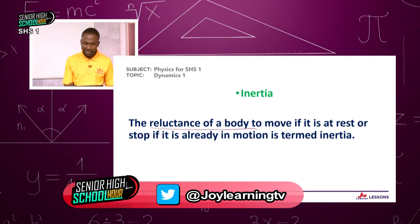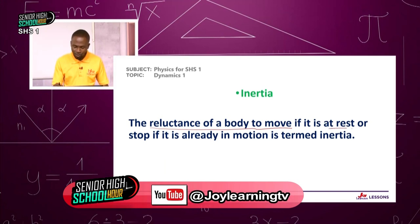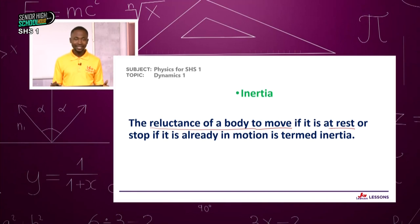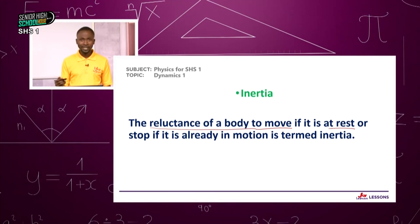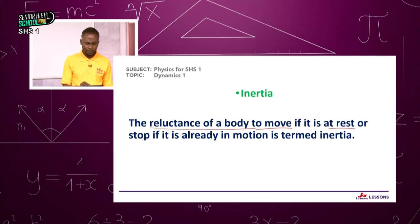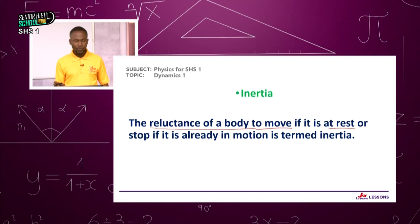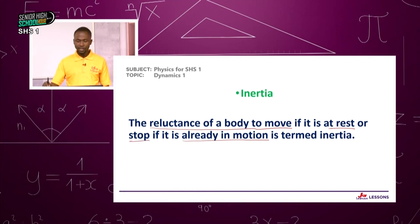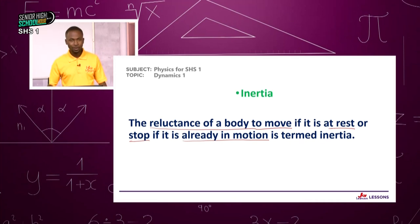Inertia is the reluctance of a body to move when it is at rest. So the body is at rest, you try to push it to change its state of rest, but it doesn't want to move — it offers a resistance. That is inertia. Or, if the body is in motion, you try to stop it, and it says no — it keeps moving. That reluctance of a body to stop if it is in motion is also called inertia.